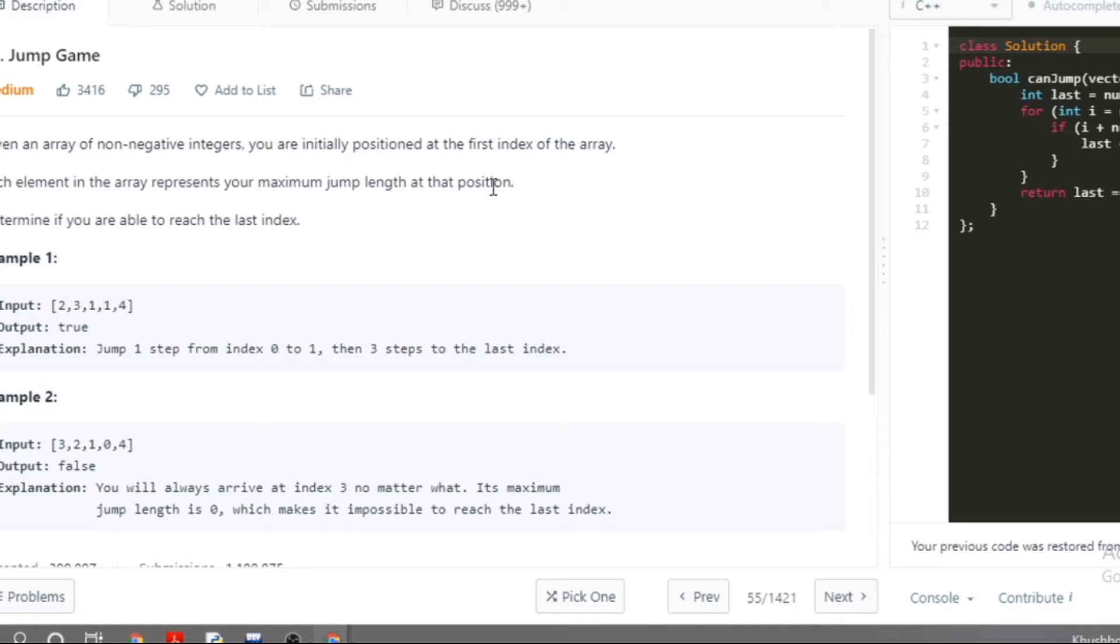Determine if you are able to reach the last index. So what we have to do in this basically is if we have given an array, each element in the array is the number of jumps we can take from this position. So we have to tell if we can reach from this position to the last position by any means.